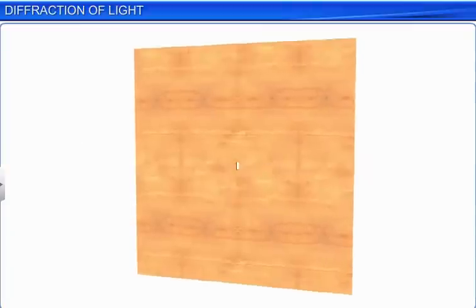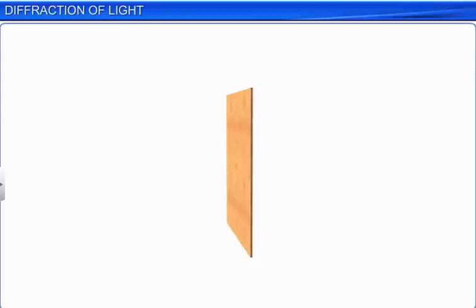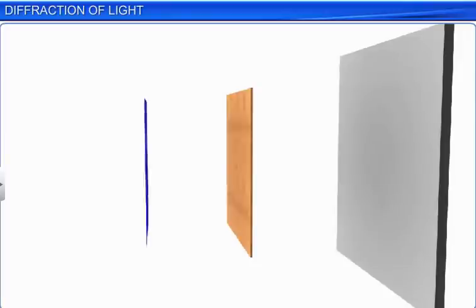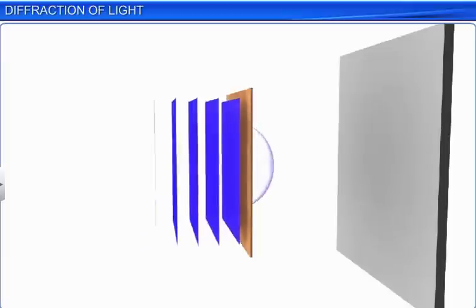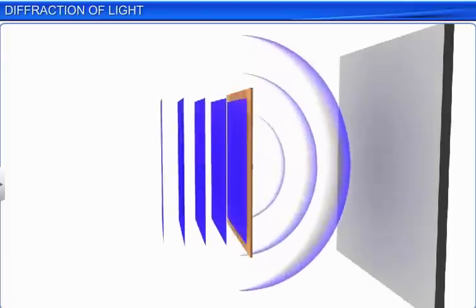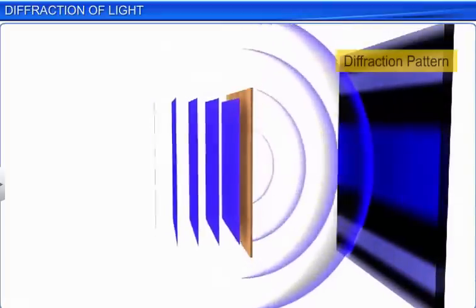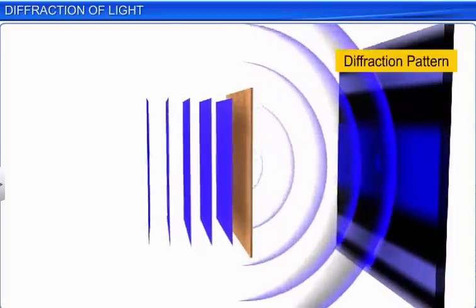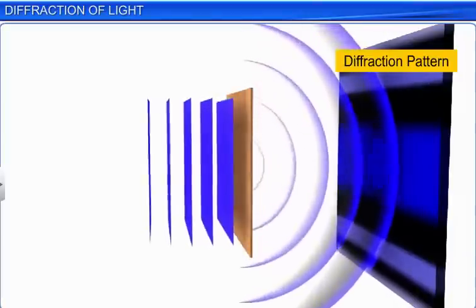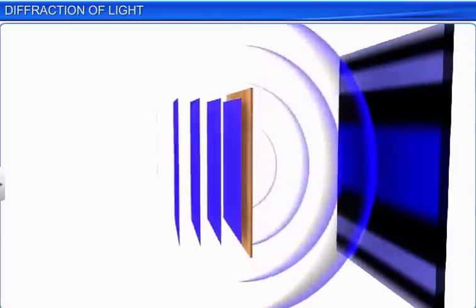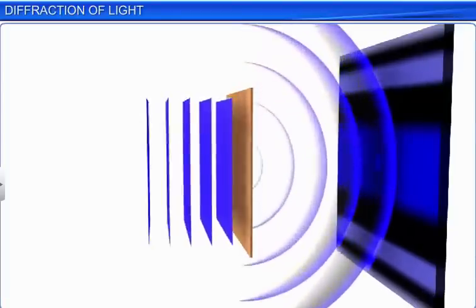Let us now study diffraction of light at a narrow slit. Place a monochromatic light source on one side and a screen on the other side of a narrow slit. When the slit is illuminated by monochromatic light, a diffraction pattern is formed on the screen. The diffraction pattern consists of a central bright band, which may be much broader than the width of the slit, with alternate dark and bright bands on both sides. The intensity of the fringes decreases very rapidly.